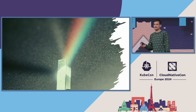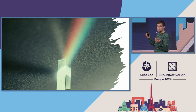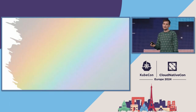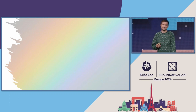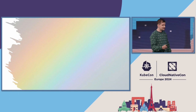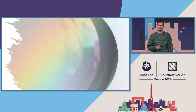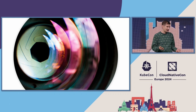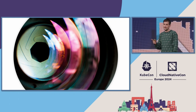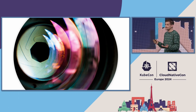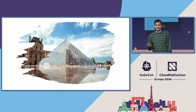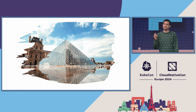Imagine the cloud-native ecosystem is a vast, radiant spectrum of light. Each wavelength represents a different technology, a different approach, a different solution. On its own, this light is brilliant, but it's scattered — like a rainbow stretched across the sky. It's beautiful, but it can be really overwhelming and difficult to comprehend in its entirety. This is where the CNCF comes in. Just as a lens bends and refracts light, focusing it into a cohesive image, the CNCF takes diverse and sometimes disparate elements of the cloud-native world and brings them into sharp focus, providing a framework and structure through which we can view this complex landscape.